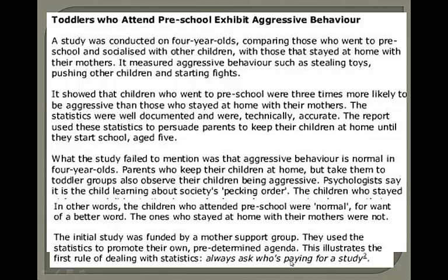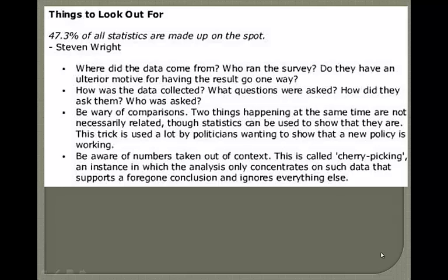That's why in this course, one of the important things is for you to be able to determine whether a study is actually true. This illustrates the first rule of dealing with statistics: always ask who's paying for the study. Where did the data come from? Who ran the survey? Do they have an ulterior motive for the result going one way? How was the data collected? What questions were asked? Who was asked? Be wary of comparisons — two things happening at the same time are not necessarily related, even though statistics can be used to show that they are. Correlation does not mean causation.